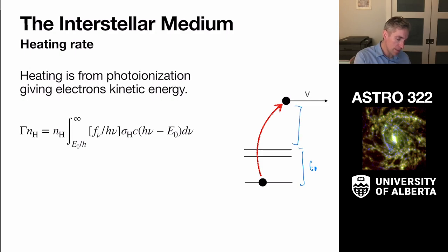And so this difference here is H nu minus E naught. If this is the speed of the kinetic energy is going to be one half mv squared for the kinetic energy in the photon.